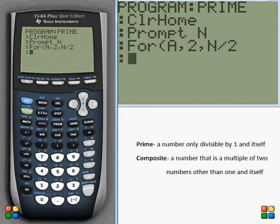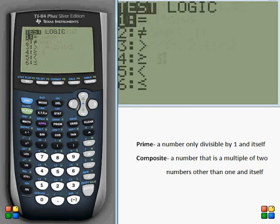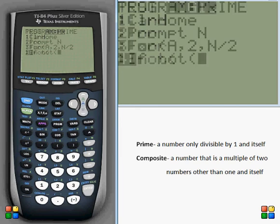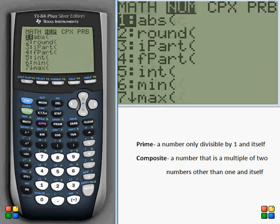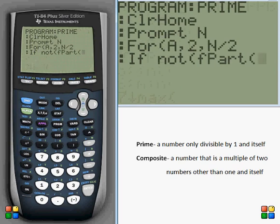So now we have to do the test for divisibility. What we're going to do is open up an if statement. And then we're going to want to invert the result of the next part. So we're going to go to second math over to logic not, which will invert this. And then we're going to go back to math, go over to number, and select the fpart command.